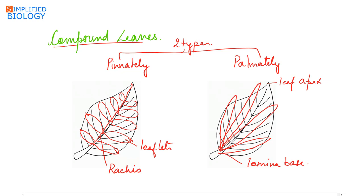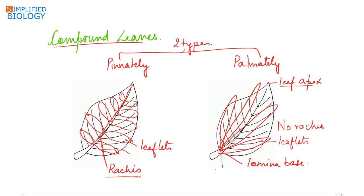To summarize: in pinnately compound leaves, the incision develops from the leaf margin and reaches the midrib, while in palmately compound leaves, the incision develops from the leaf apex and reaches the base of the lamina. In palmately compound leaves, there is no rachis, and the leaflets are found attached to the tip of the petiole.